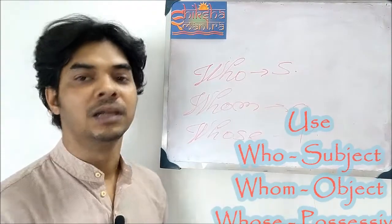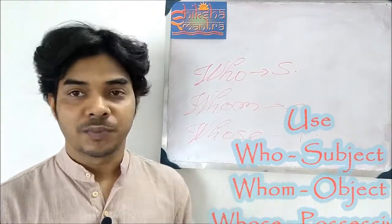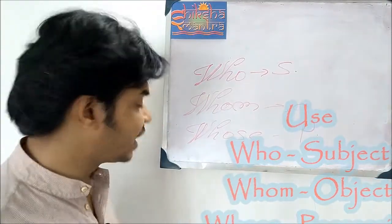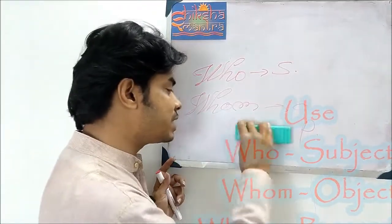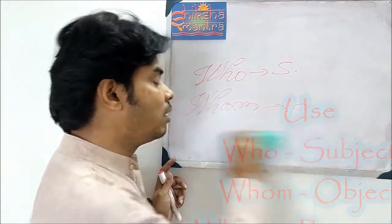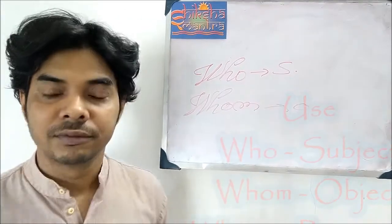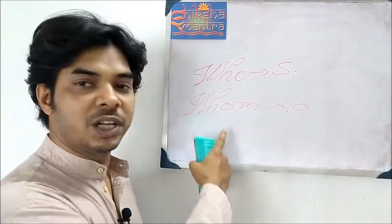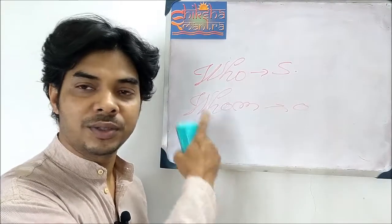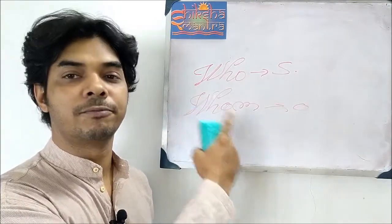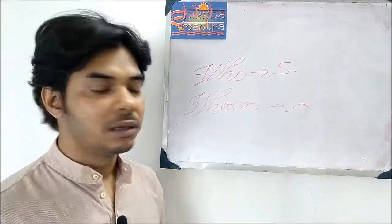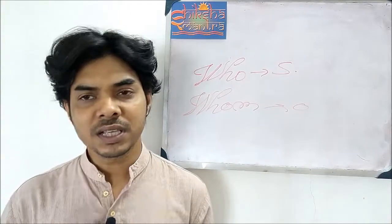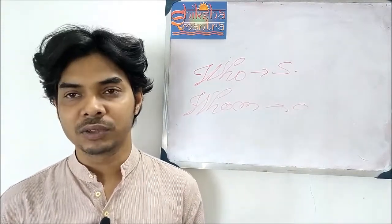There's no problem regarding 'whose' because it is always used for possessive. There's also no problem regarding 'whom' because it is used for objective only. But what about 'who'? It is used for subject — but could we also use it for object?